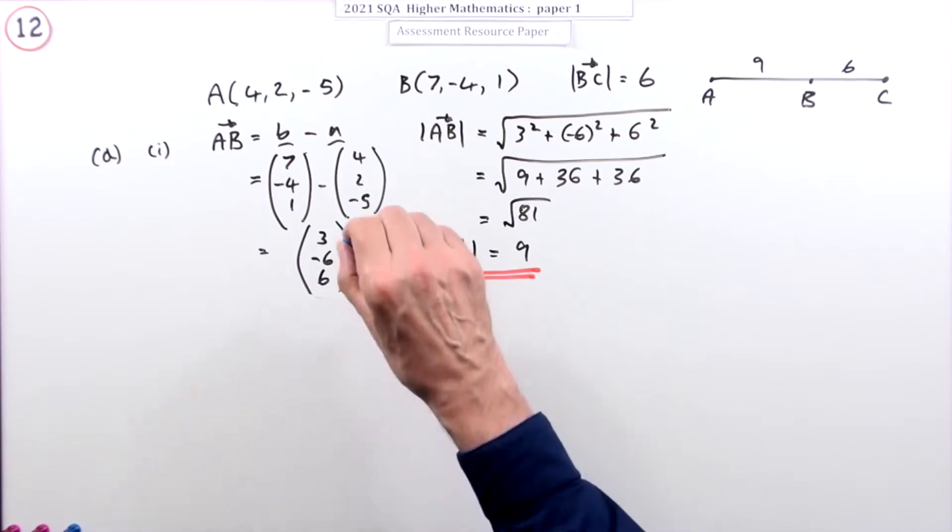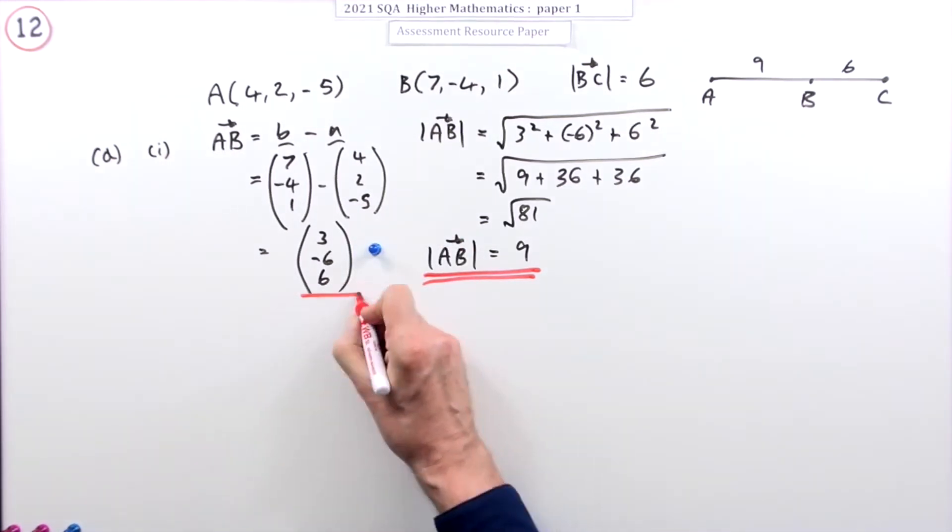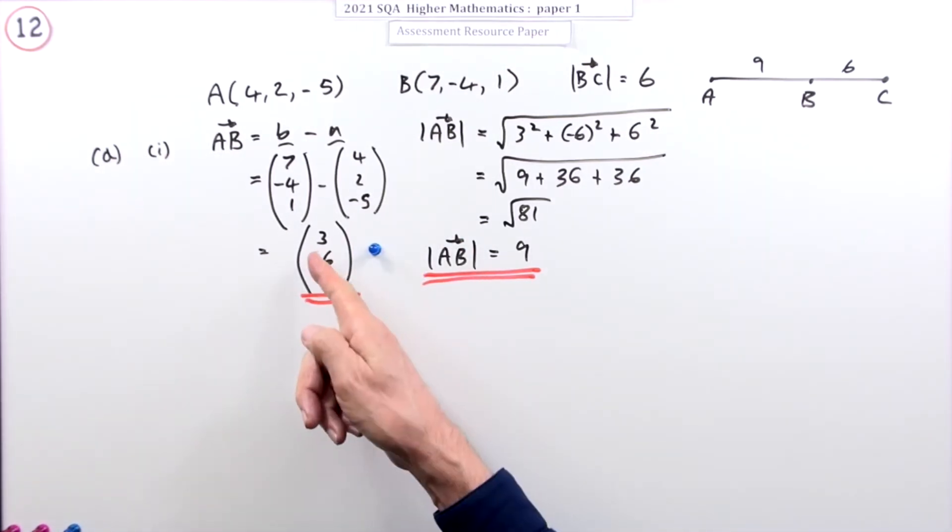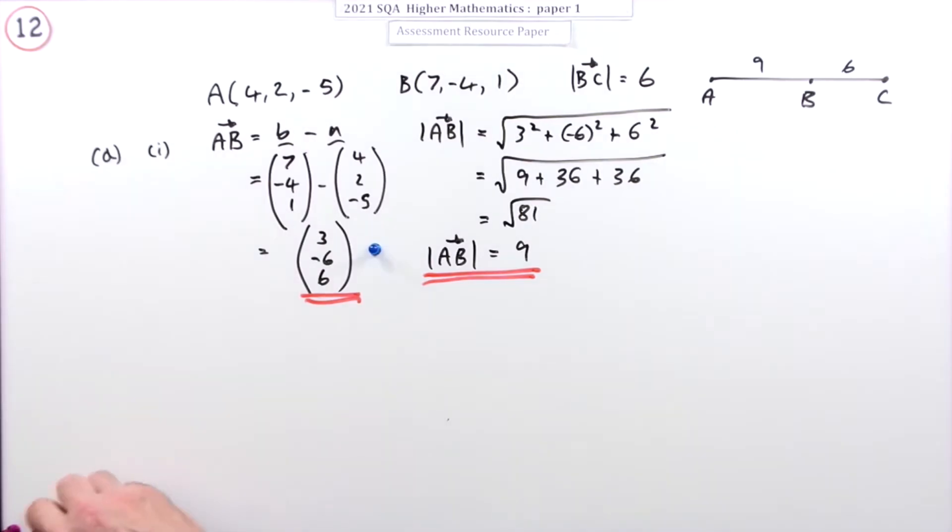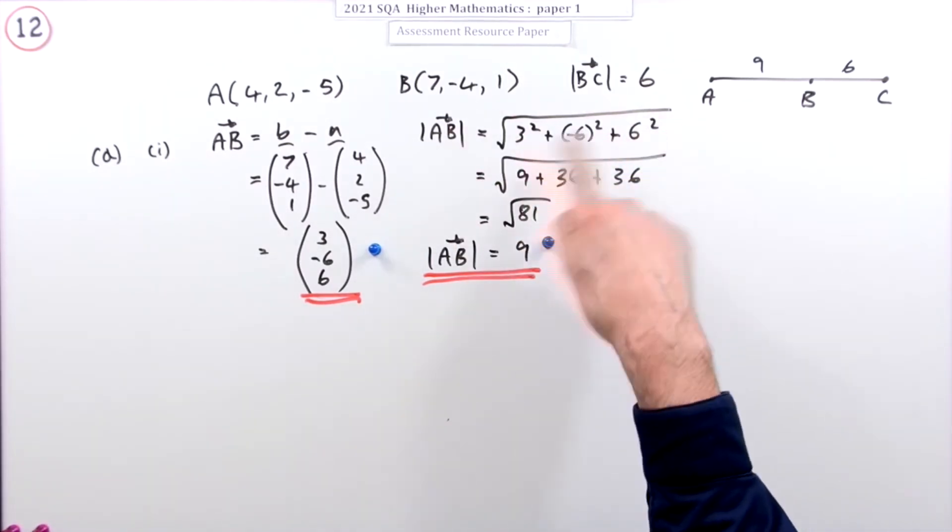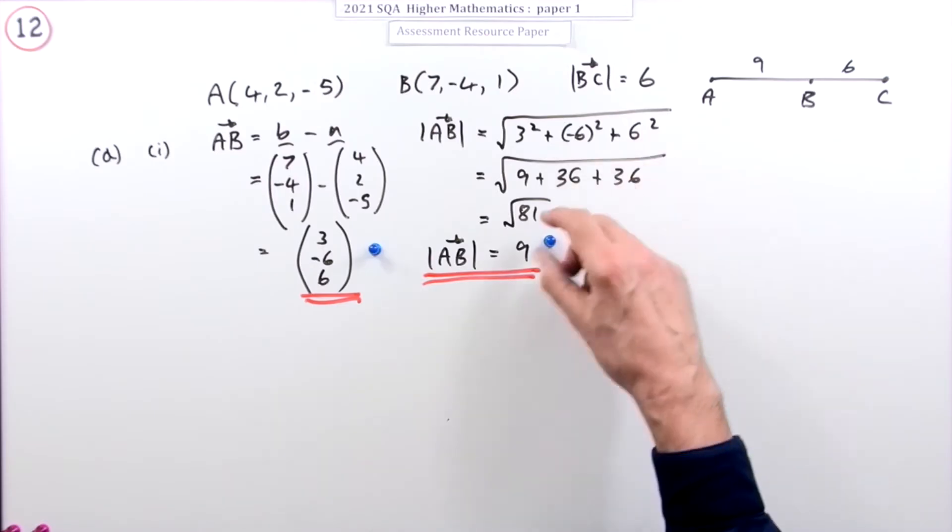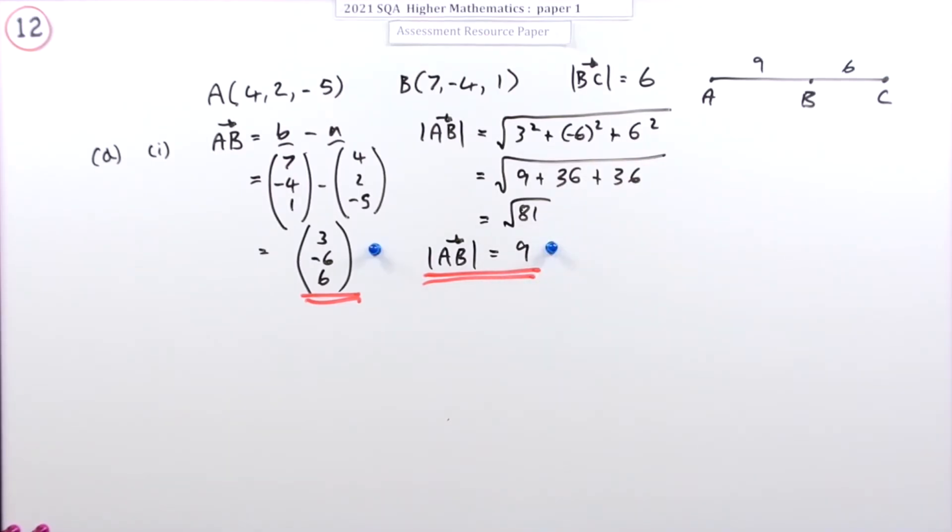So the two marks here were 1 for getting the components of that translation and 2 for carrying out that three-dimensional Pythagoras, the distance formula, to get the magnitude.